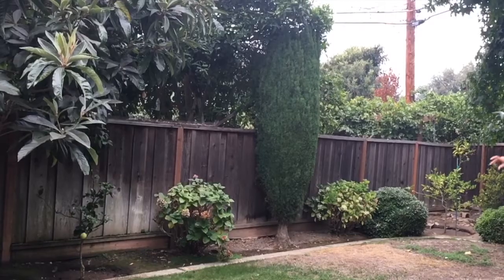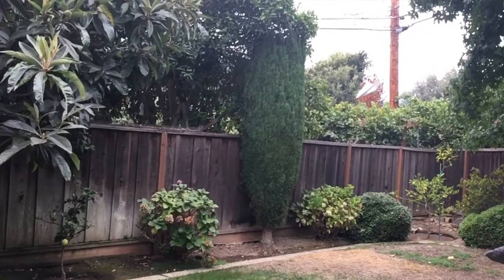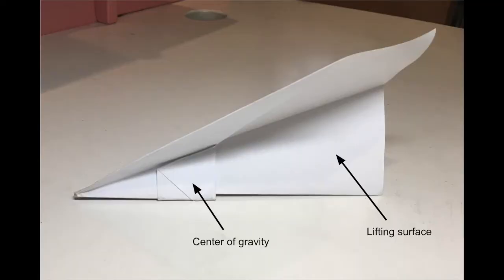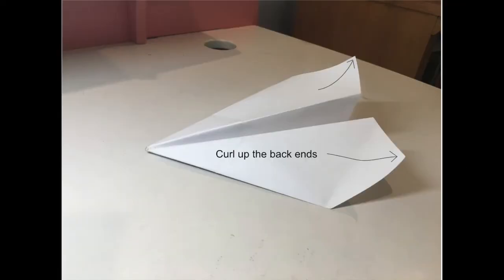One possible issue that you could run into is that the plane nosedives. This is because the center of gravity is in front of the center of lift, which pitches the nose downward and allows the plane to gain speed. However, doing this to too extreme an extent will cause the plane to nosedive. You can fix this issue by bending the back corners up a bit so that it balances out the downward tilt.